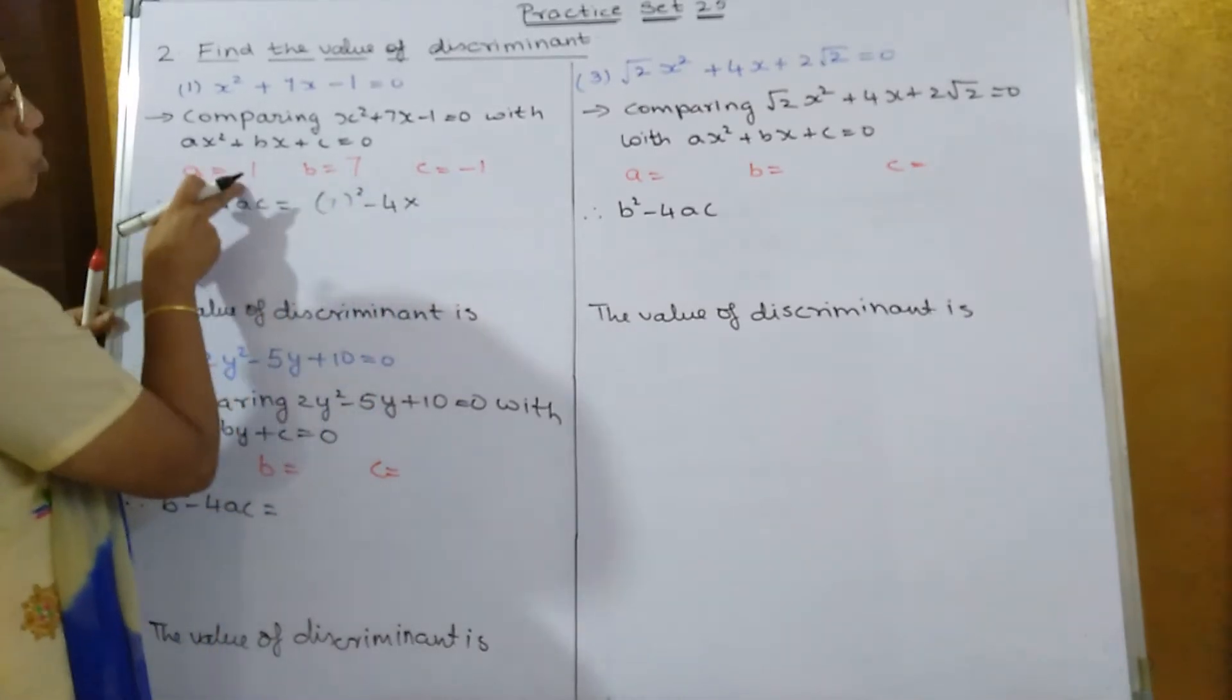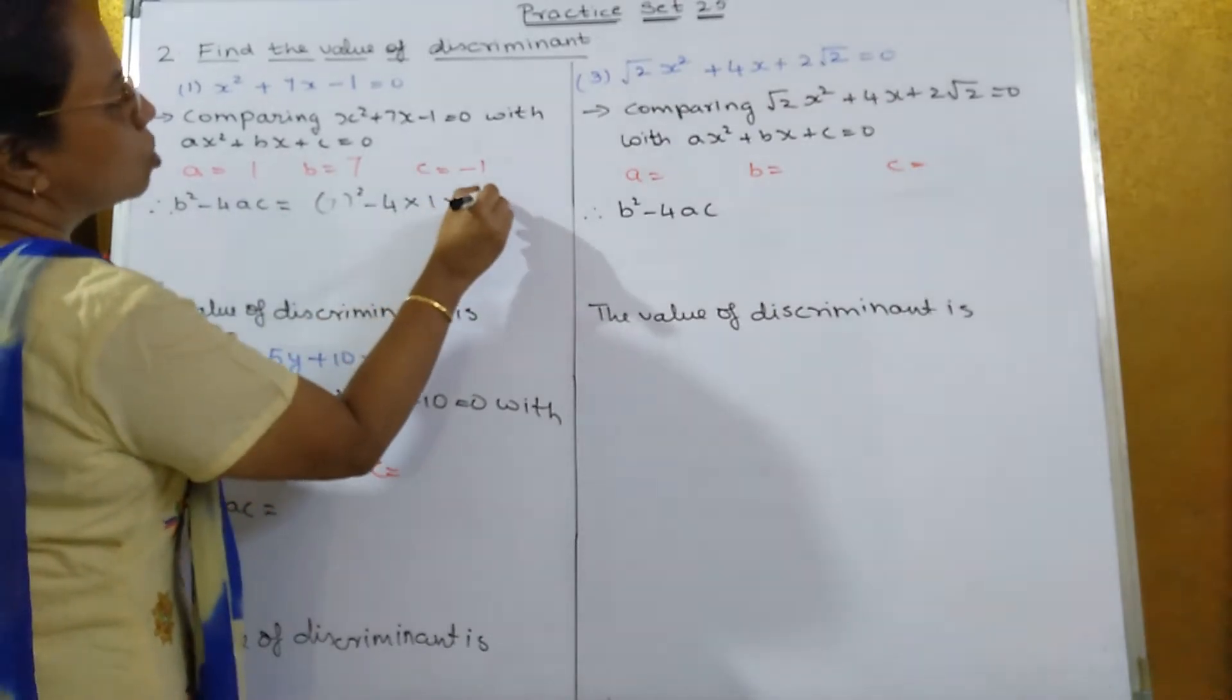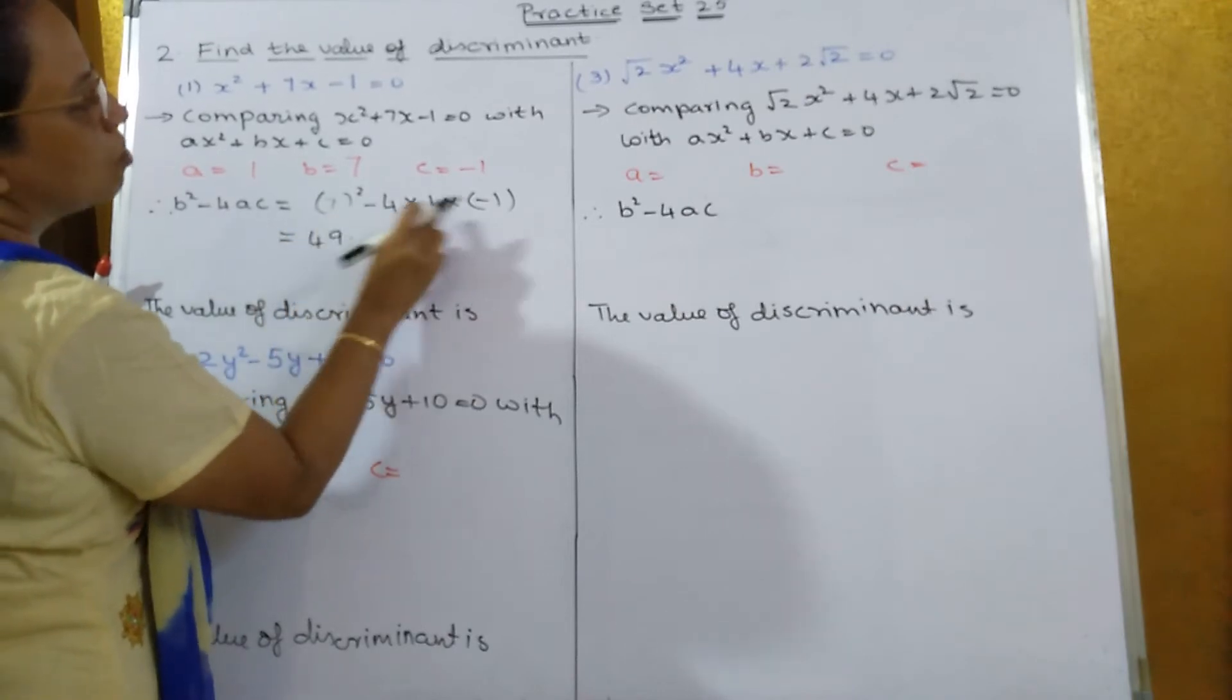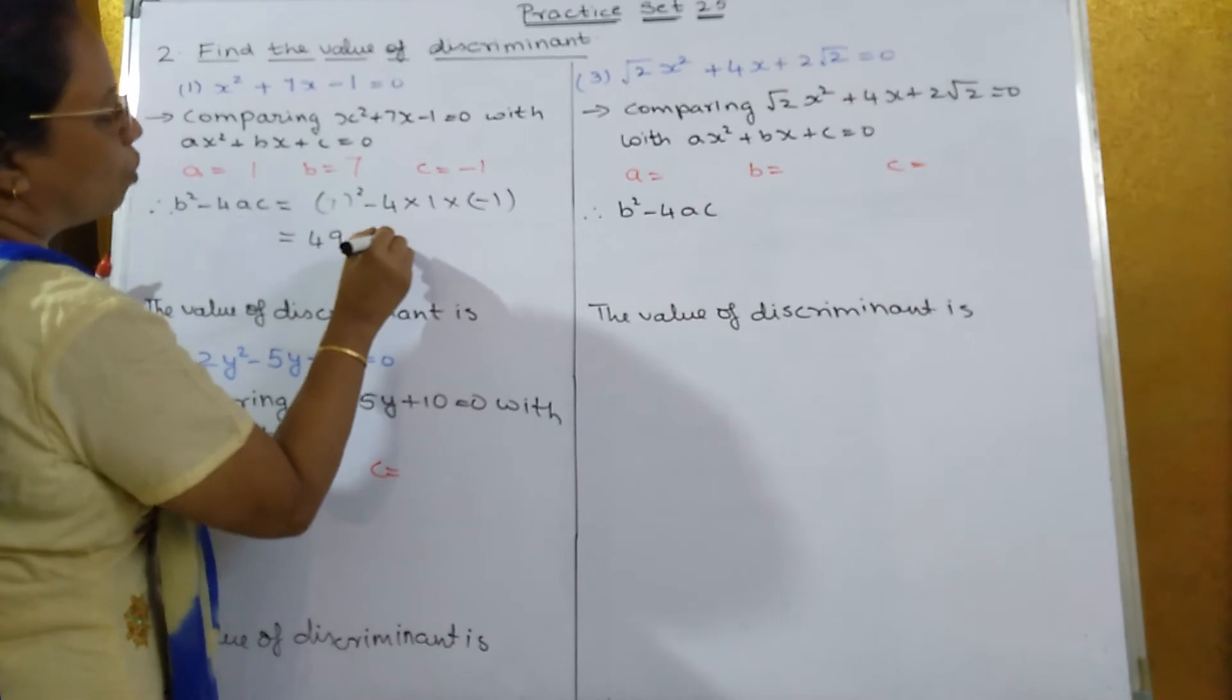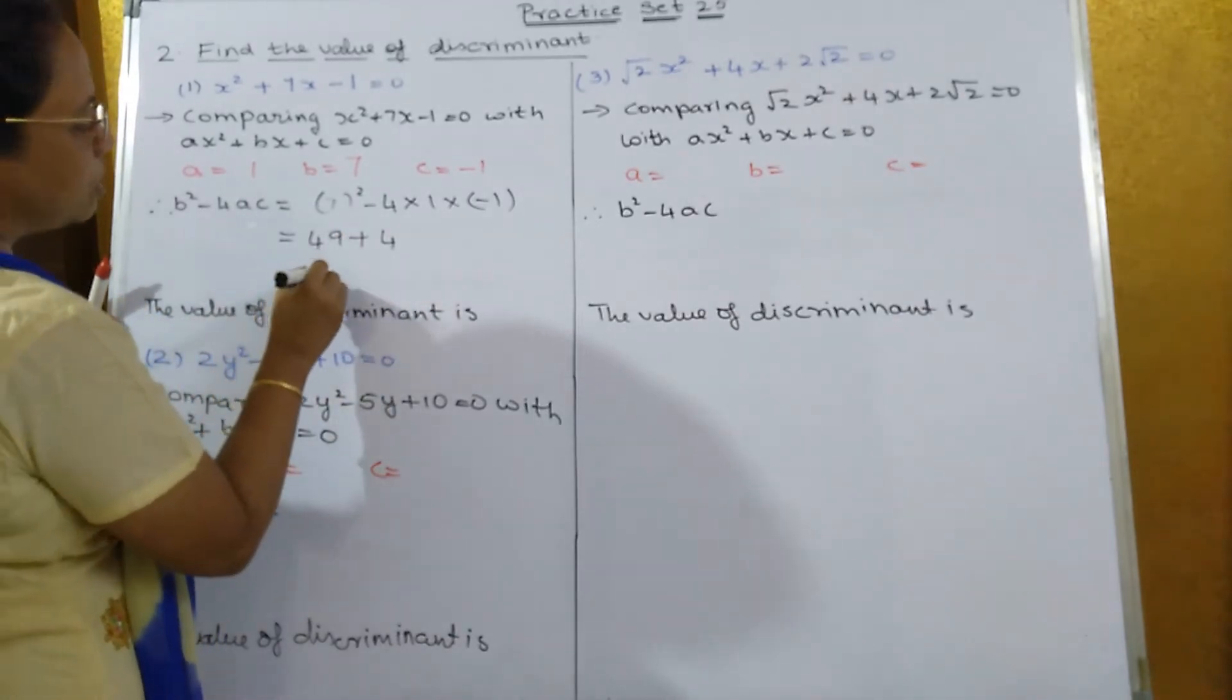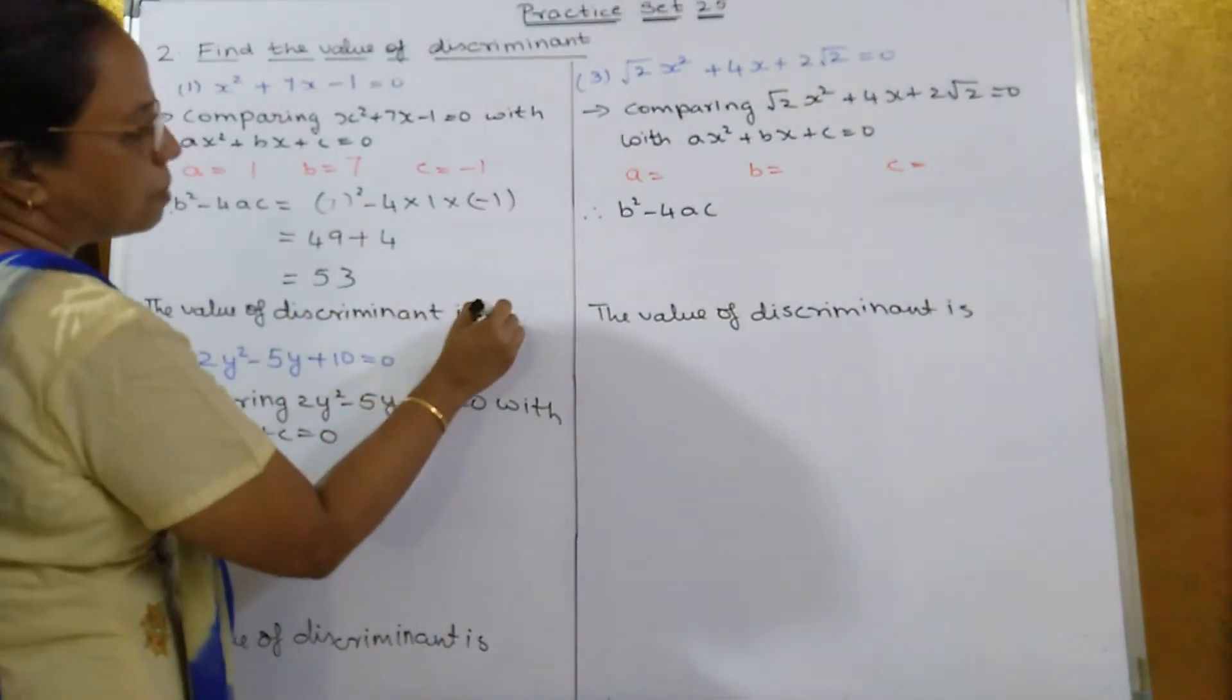Into a, is how much? 1. Into c is equal to how much? Minus 1. So that is equal to 49. Minus into minus will become plus 4. Into 1 into 1 will become 4. So the value of 49 plus 4 is equal to how much? 53. So the value of the discriminant of the first sum is how much? 53.